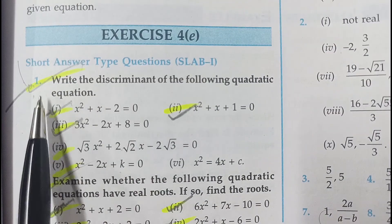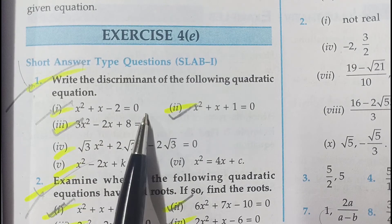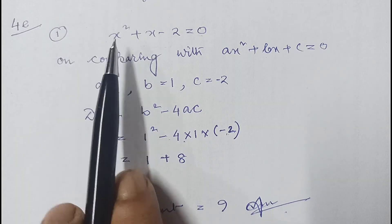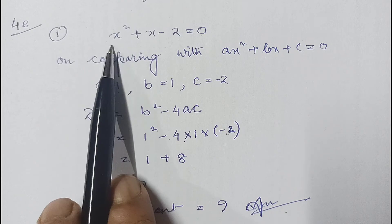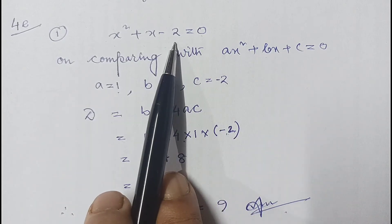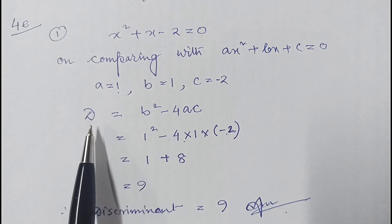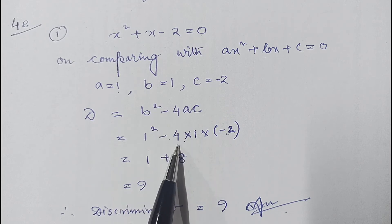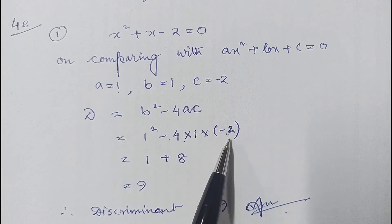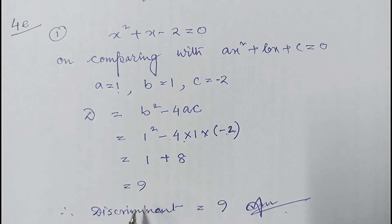In question number 1, we must write the discriminant of the following quadratic equations. First equation: x² + x − 2 = 0. Comparing with ax² + bx + c = 0, we get a = 1, b = 1, c = −2. Discriminant = b² − 4ac = 1² − 4(1)(−2) = 1 + 8 = 9. Therefore the discriminant of this equation is 9.